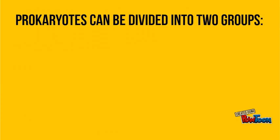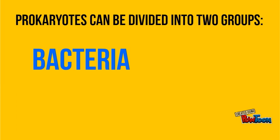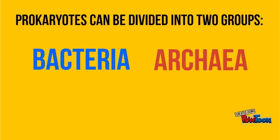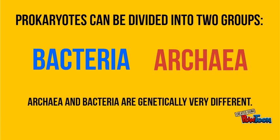There are two main groups of prokaryotes: bacteria and archaea. Bacteria and archaea are genetically very different, resulting in distinct cell wall and membrane compositions.